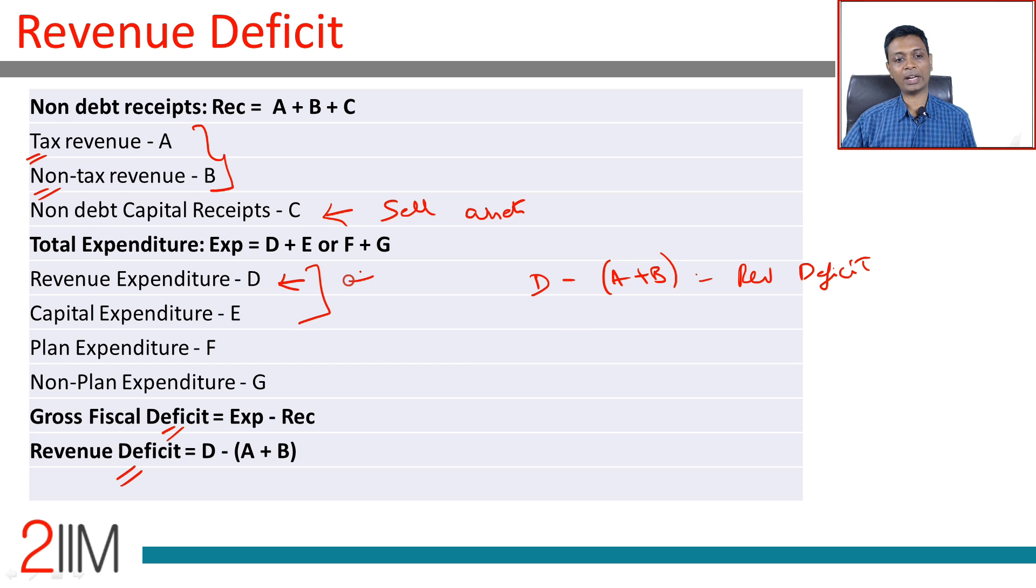Revenue expenditure: you pay rent, you pay for food, you go for entertainment, you watch a movie - all of those revenue expenditure. Capital expenditure: you bought a house, you are paying EMI on it. The repayment component of the EMI is capital expenditure. You take a loan for education, the loan repayment component is capital expenditure.